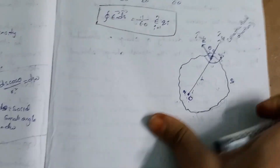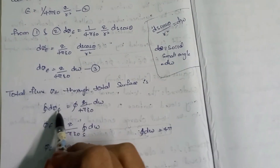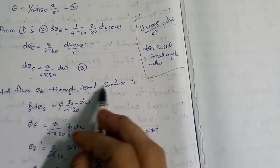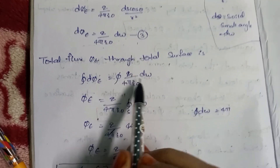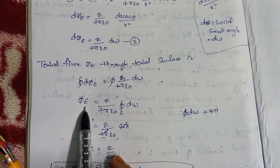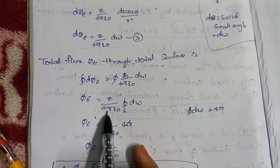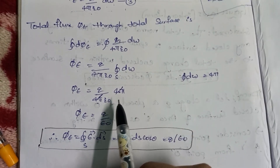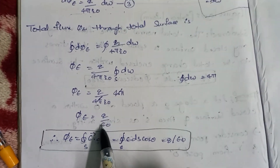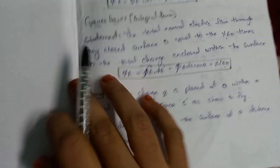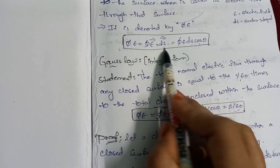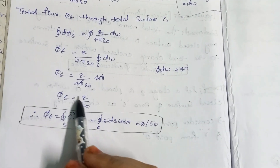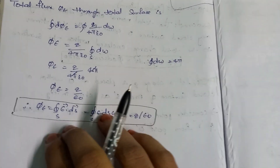The total electric flux φ_E through the total surface is φ_E = ∮(Q/4πε₀) dω, where dω is the solid angle element. Since Q/4πε₀ is a constant, and the integration of dω over a closed surface equals 4π, the 4π terms cancel, giving φ_E = Q/ε₀. This proves the integral form of Gauss's law.